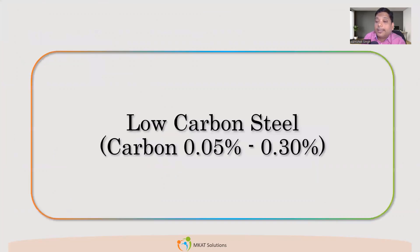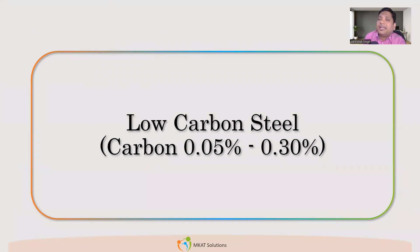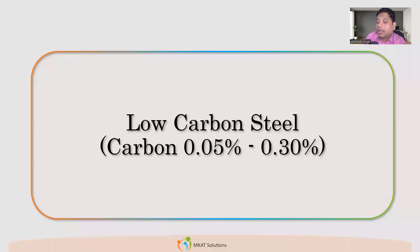For low carbon steel, the carbon percentage is 0.05 to a maximum of 0.3. There can be slight variations like 0.31 or 0.32, but not more than that.